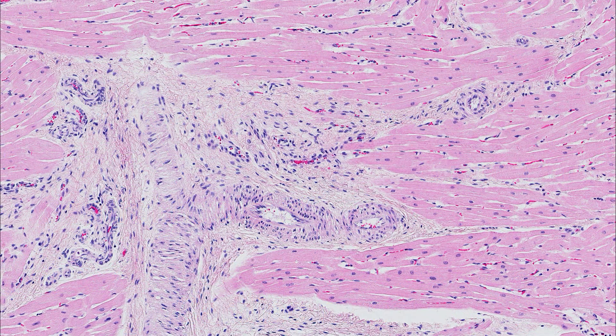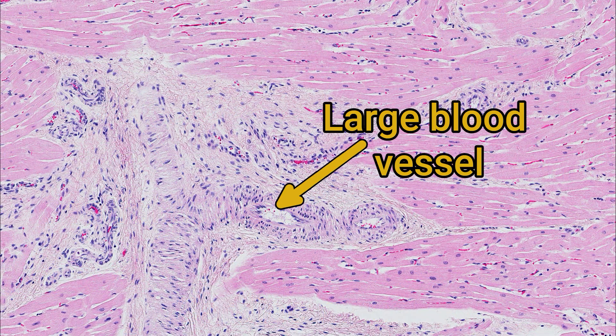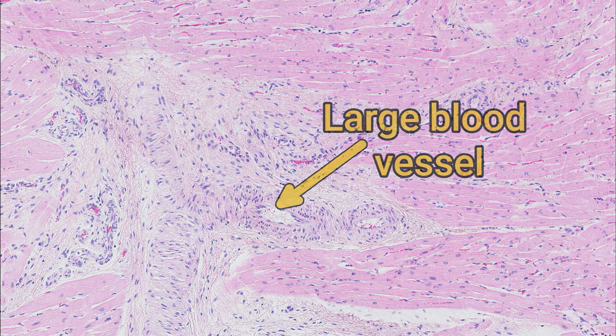Within the connective tissue separating cardiomyocytes, you might find larger blood vessels, nerves, and fibrocytes producing collagen.